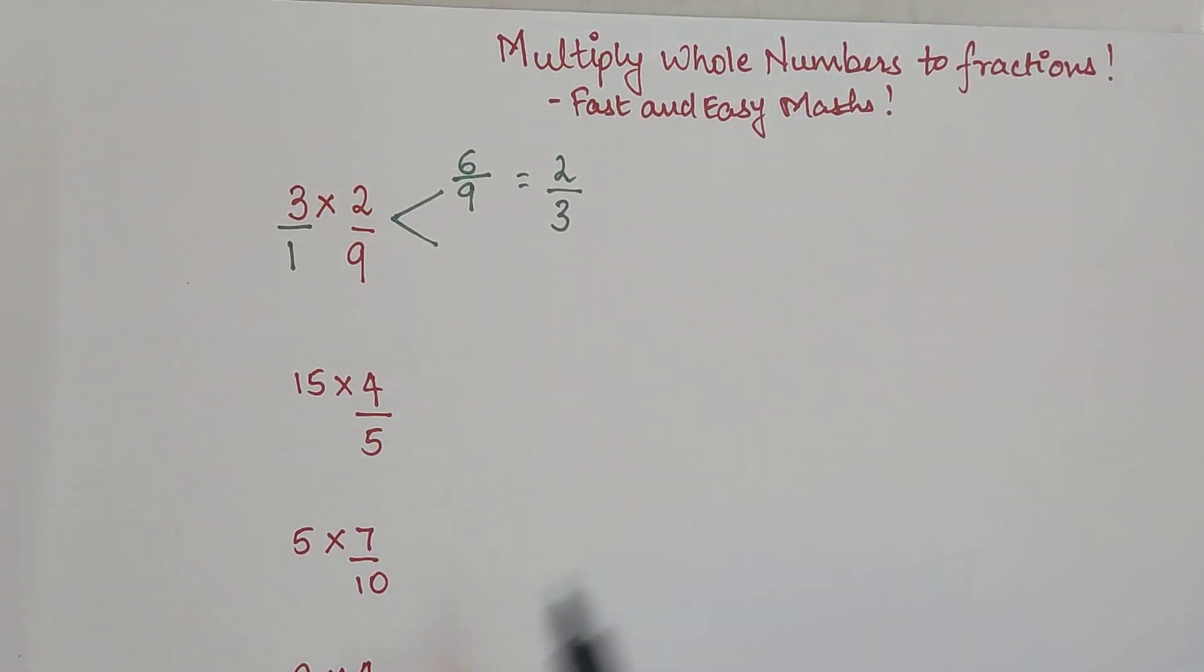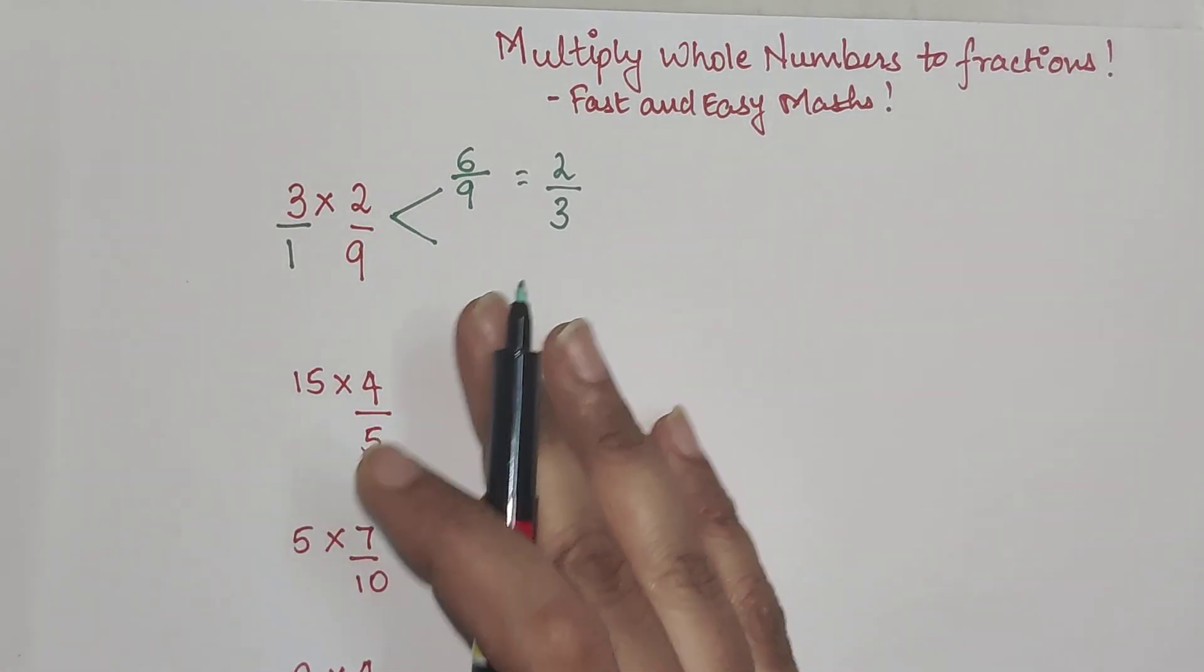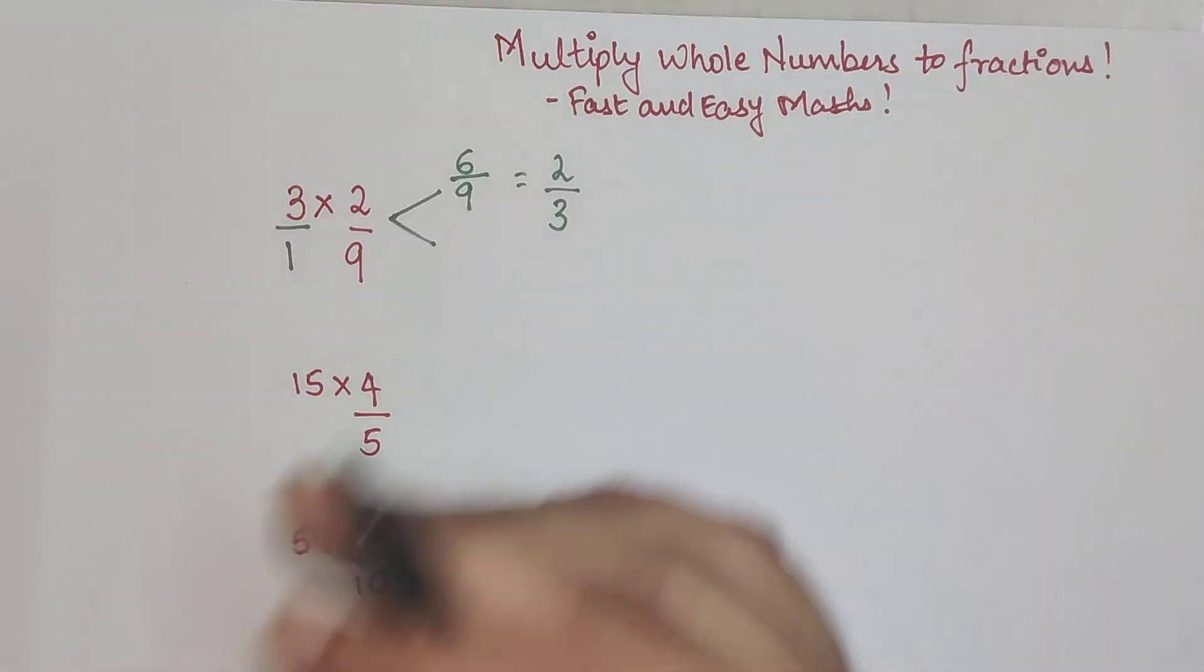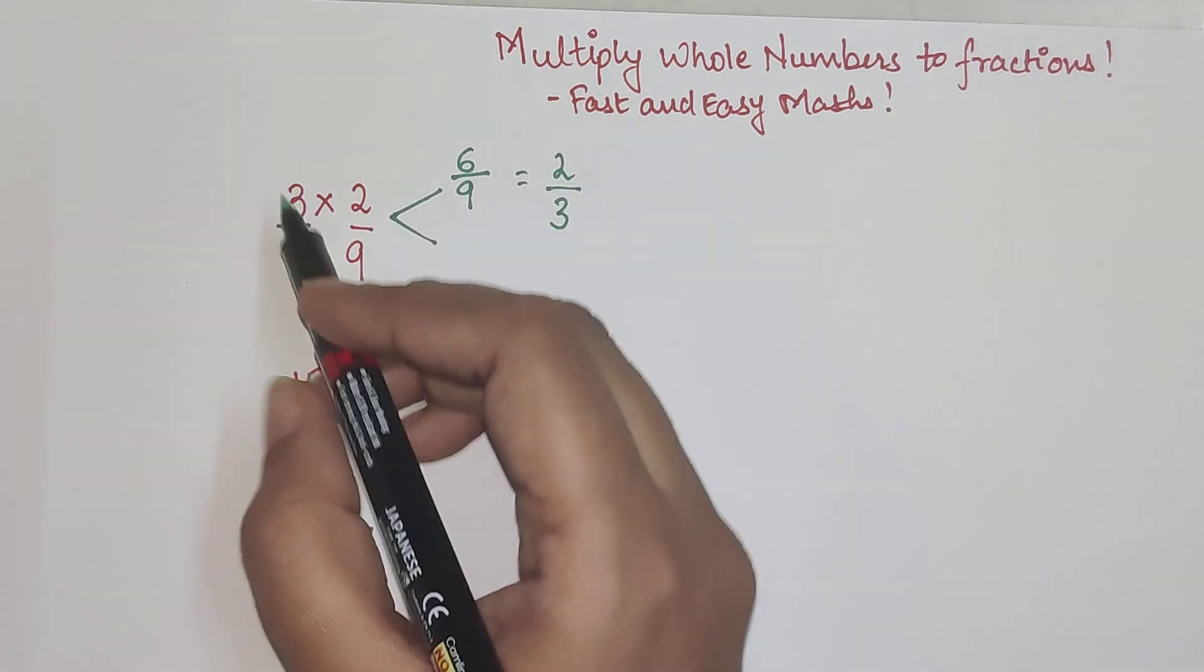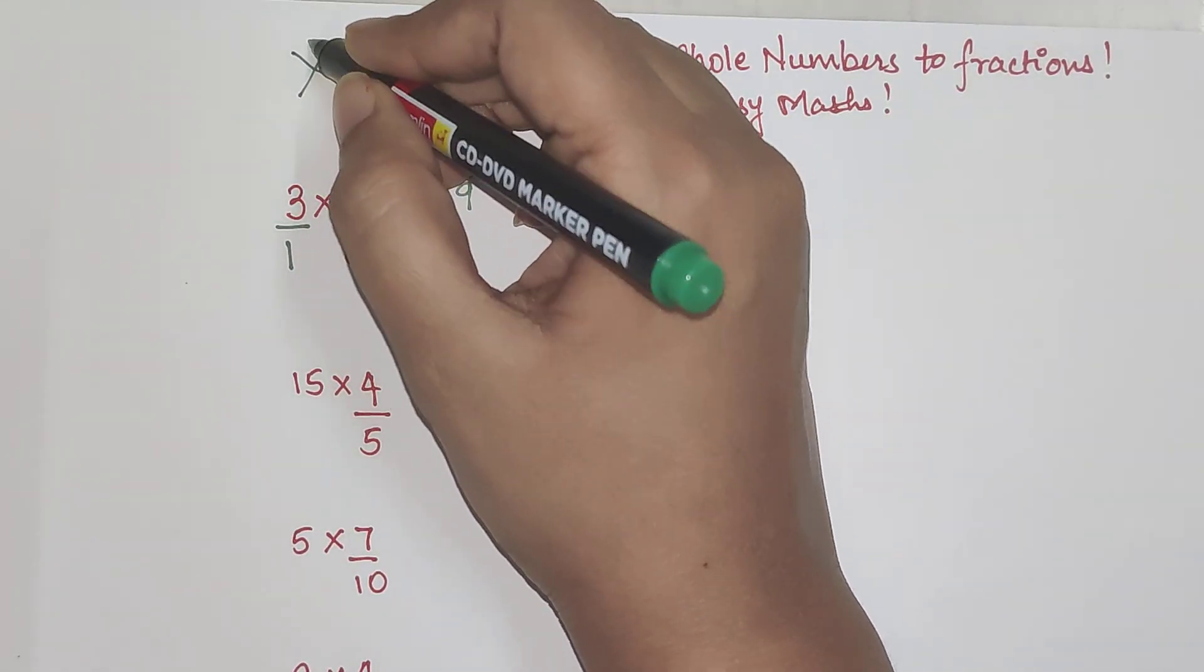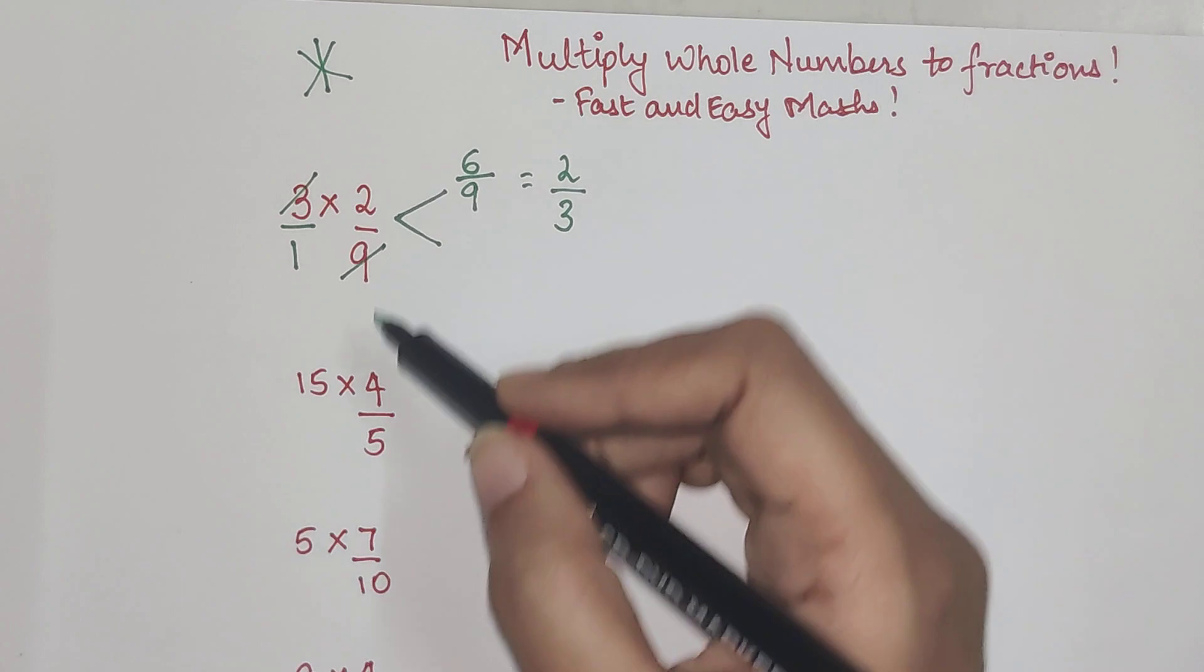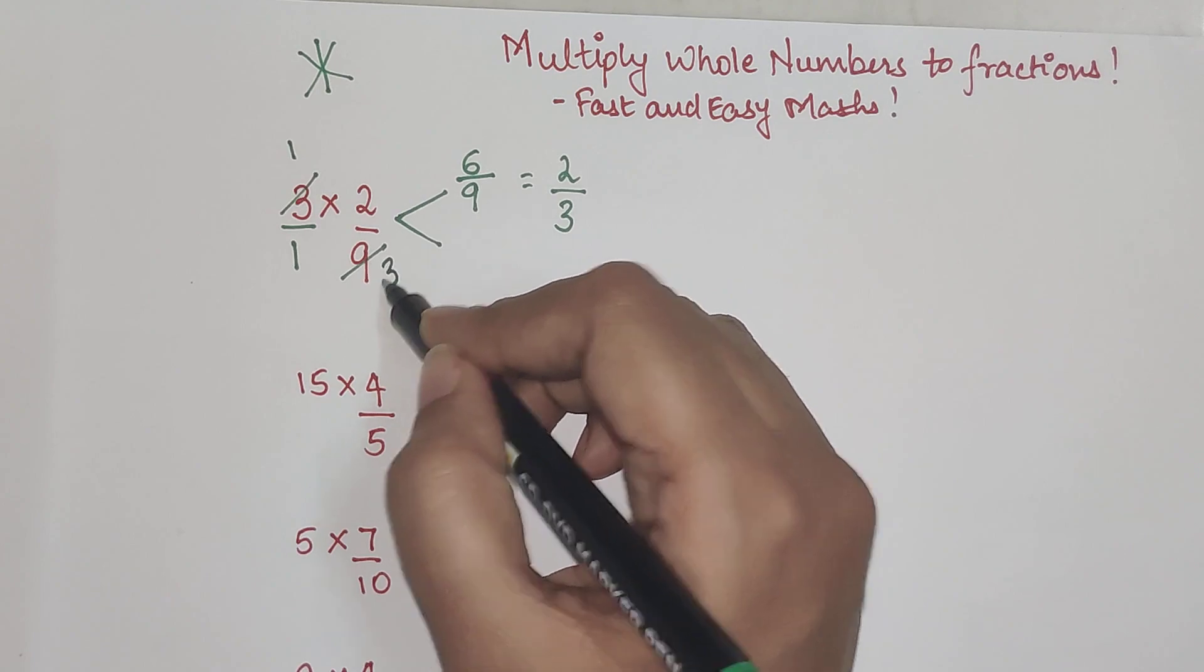So this is one way of doing like I said. But then there is another way which is much much easier and much much faster. So here what you can do is please understand whenever you are doing a multiplication operation in fractions, you can always cancel diagonally or up and down, but you cannot cancel horizontally.